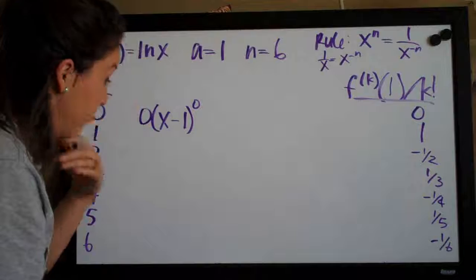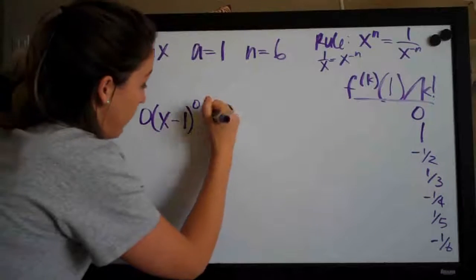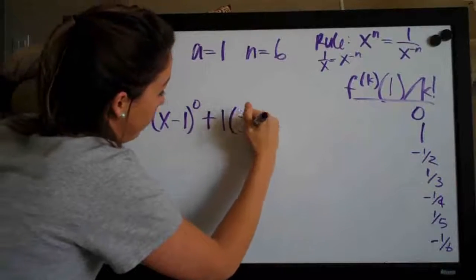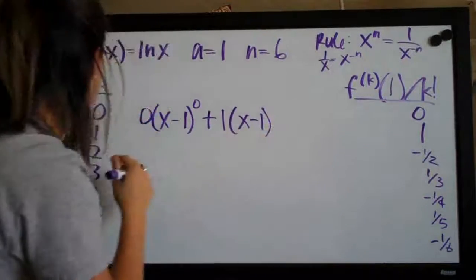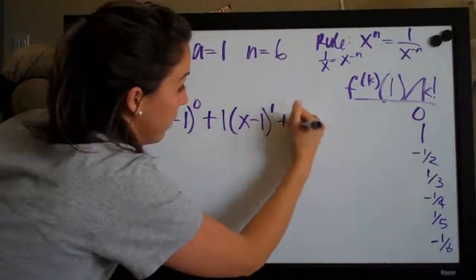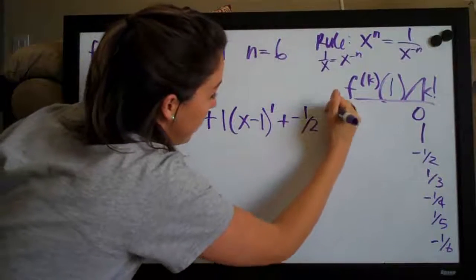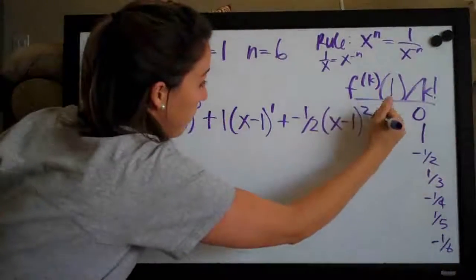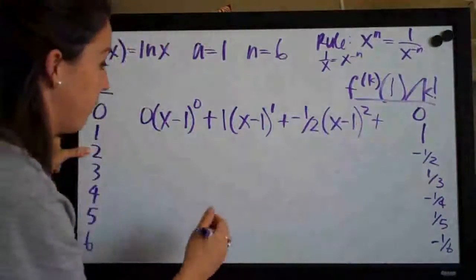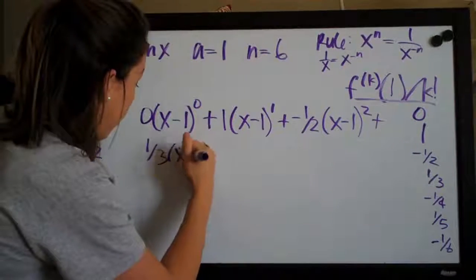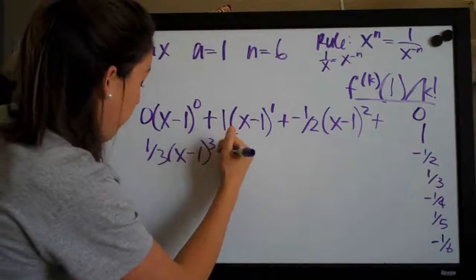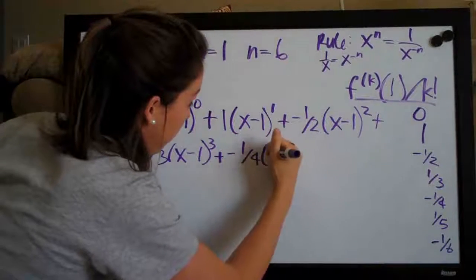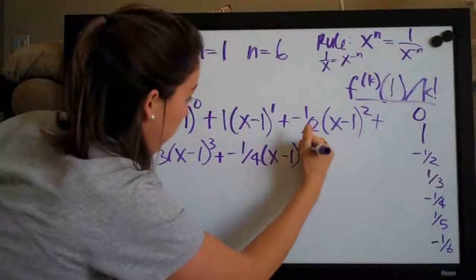So we just go on writing the polynomial like that and then we always add them together. So again, coefficient one times x minus a to the first power plus negative one-half times x minus one to the two plus one-third times x minus one to the three plus negative one-fourth times x minus one to the four.